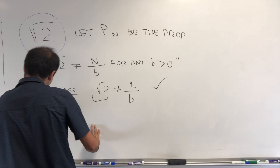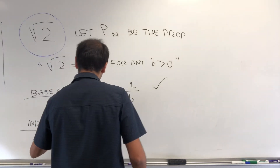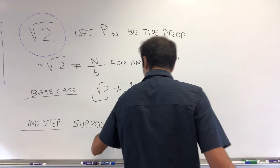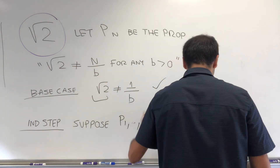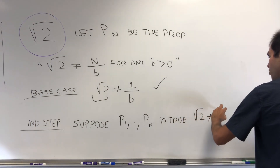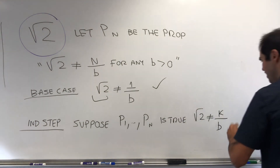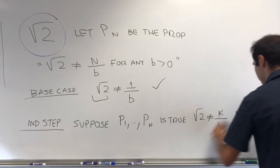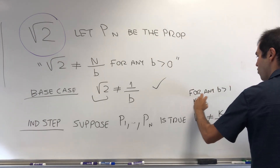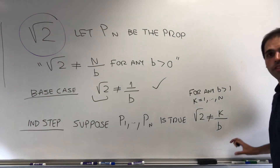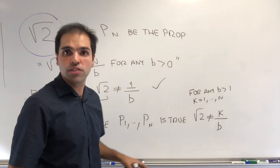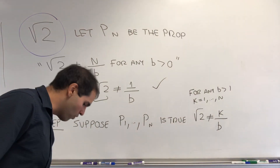So for the inductive step, suppose P1 up to Pn is true—that is, square root of two is not equal to k over b for any positive b, for k from 1 to n. So you cannot write it in the form something over a positive number, where that something is between 1 and n.